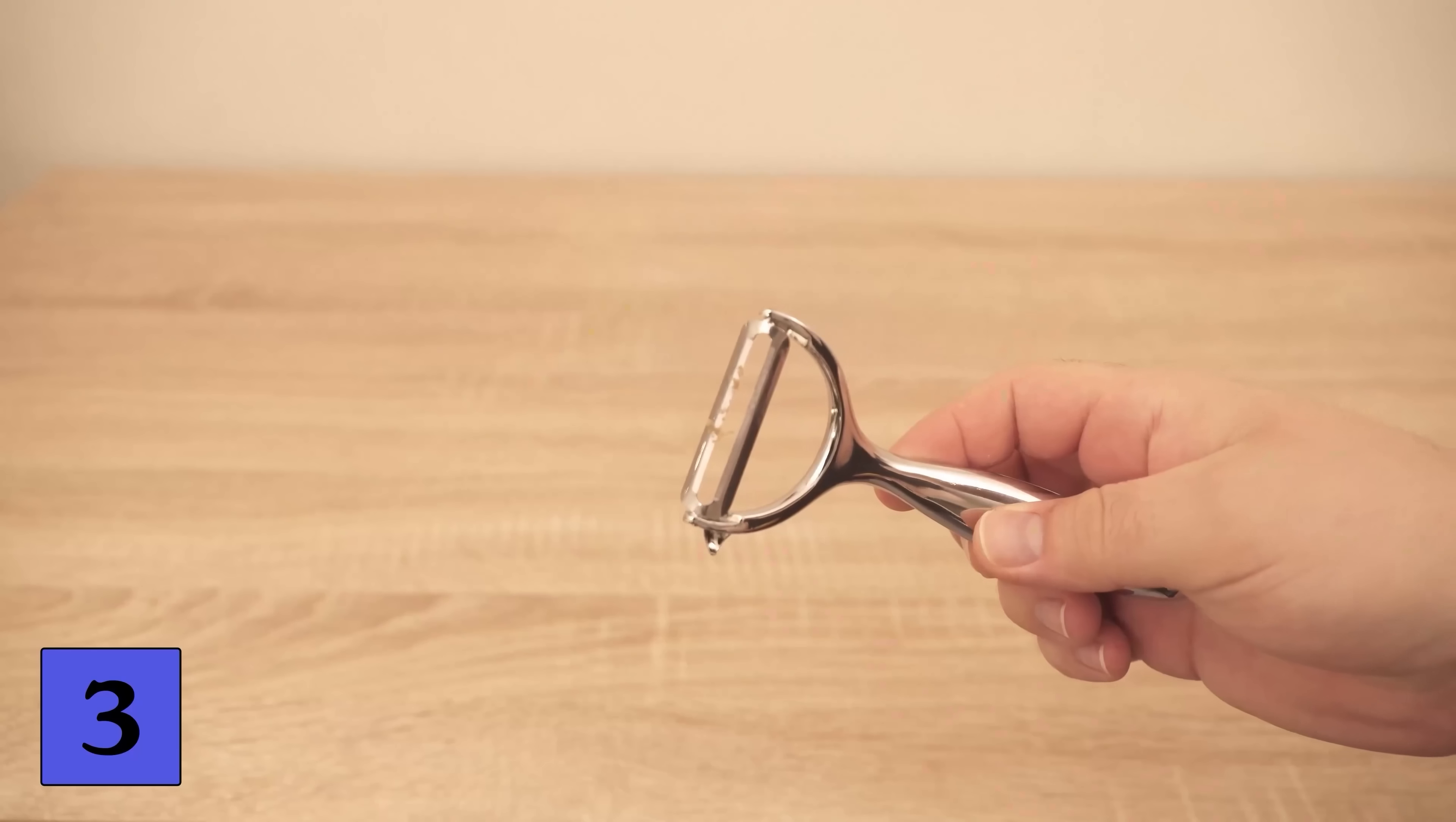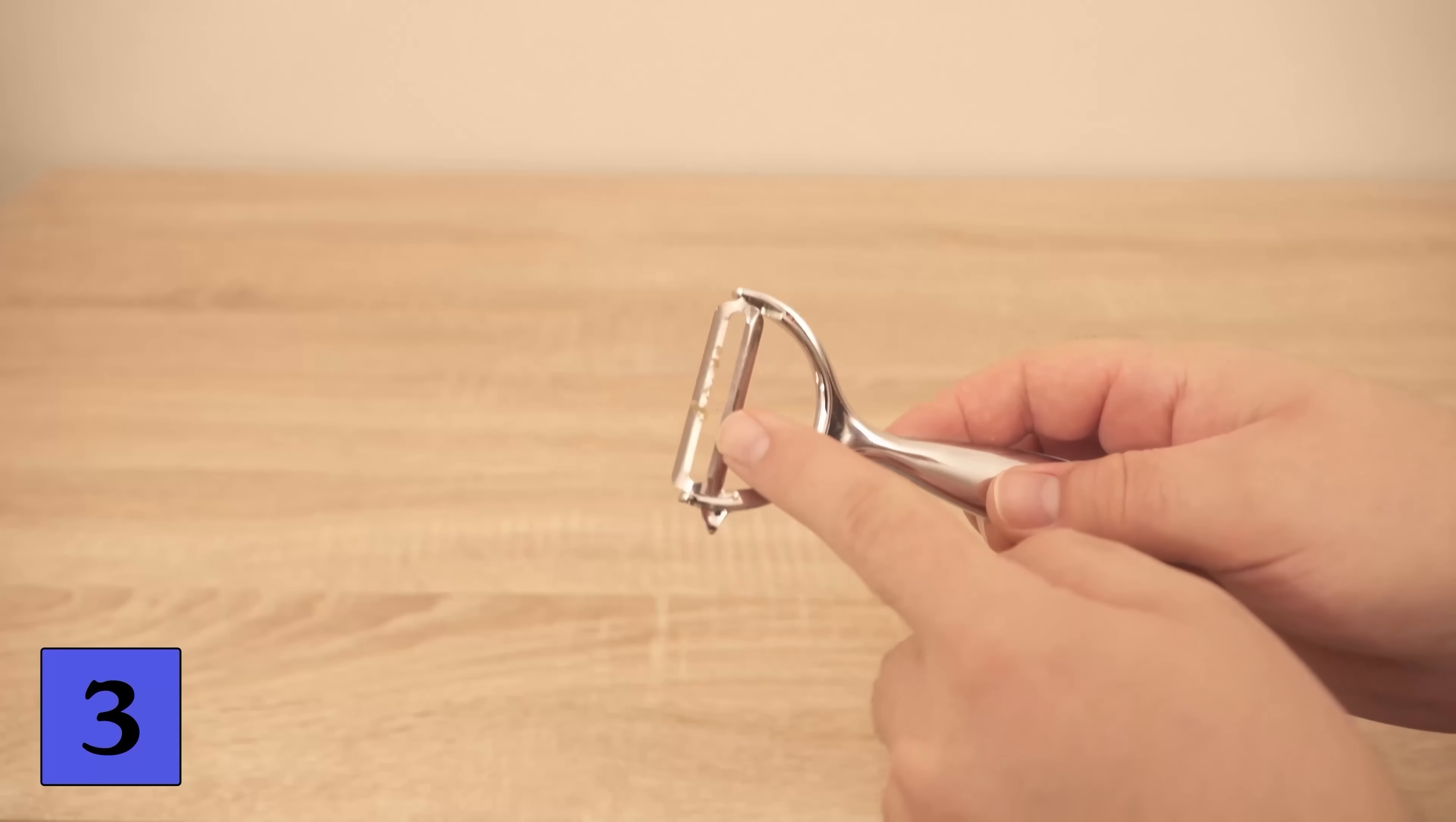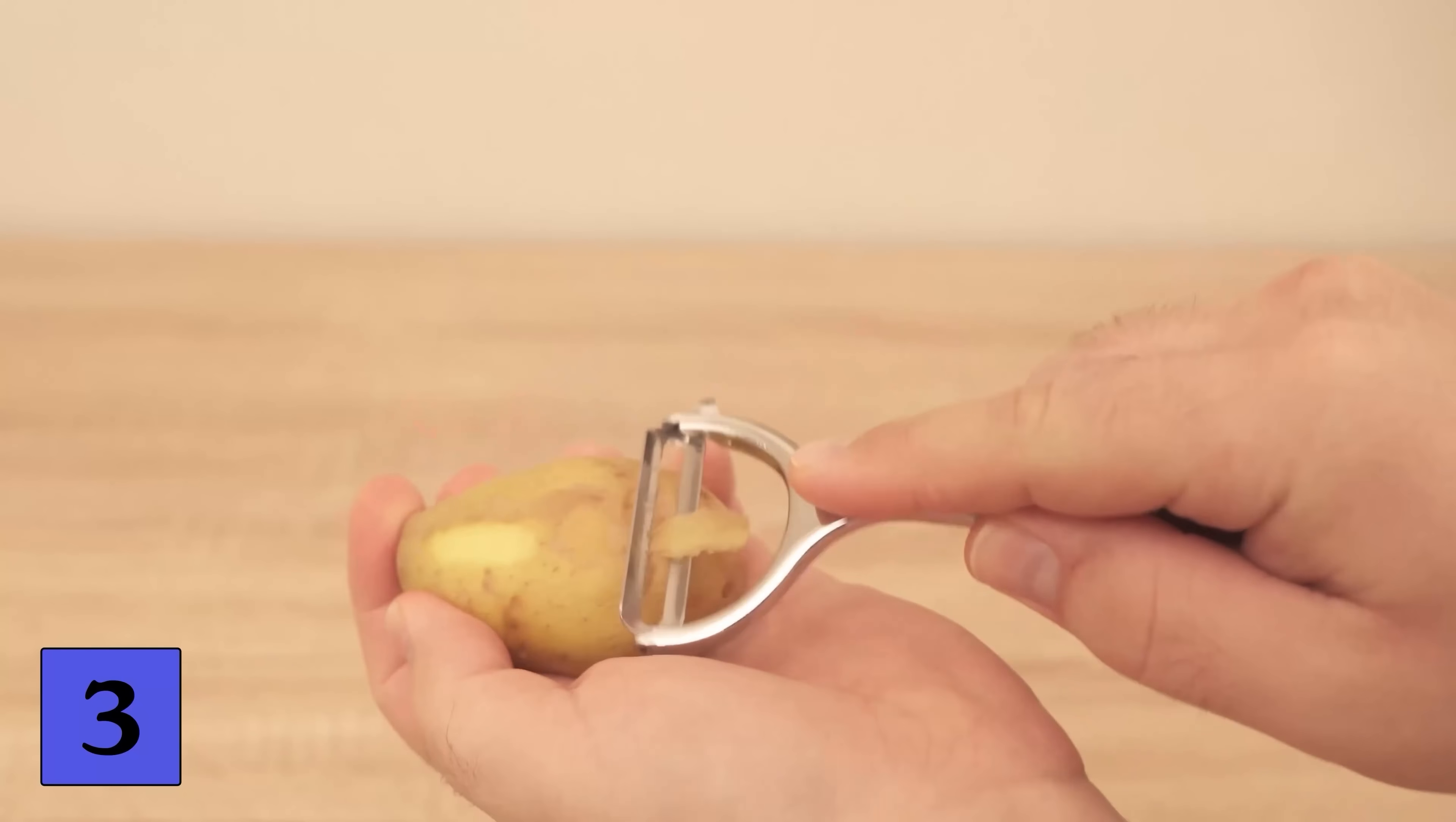But if you take a closer look at the peeler you might notice that there is a blade on both sides. Of course this is not the case with all peelers but with most of them. So take a closer look at yours because if this is the case then you can peel by going from top to bottom and staying on top of the potato.